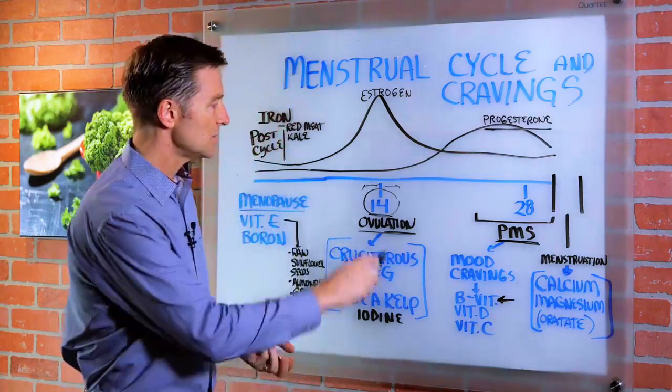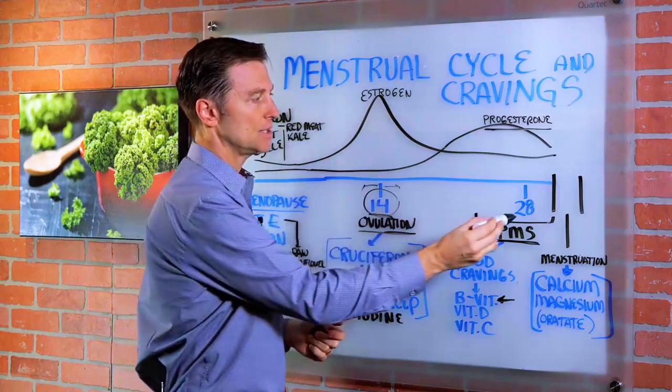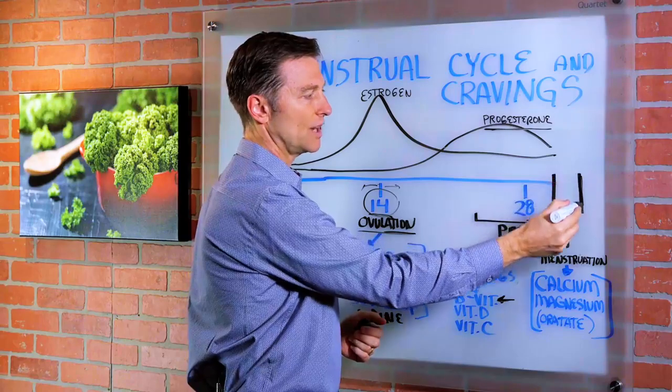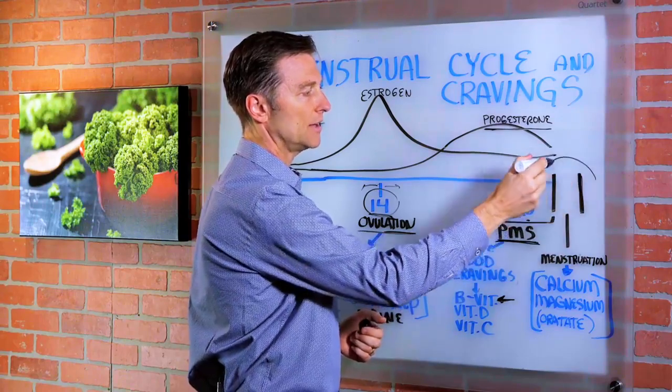So here's day 14 when you're ovulating, day 28, and then you're going to right before your actual menstruation where you're having your period right here.